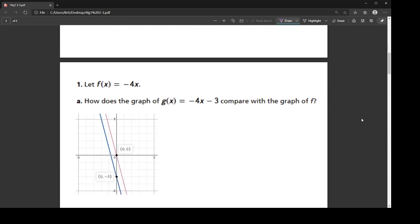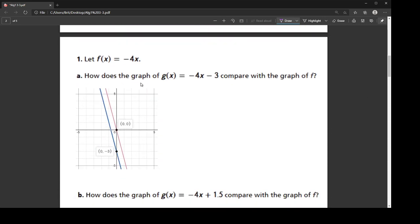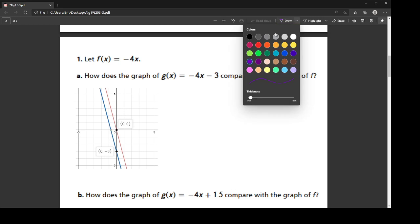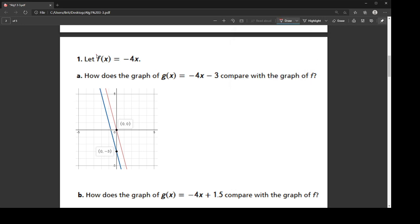Okay, so here's another example. So this red function, the red line, is the graph y equals negative 4x. The y-intercept, notice there's nothing being added, so the y-intercept is 0.